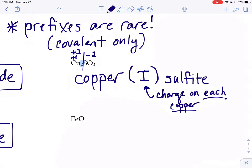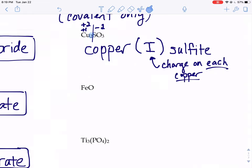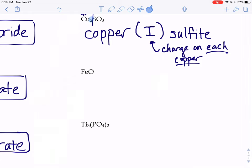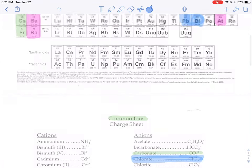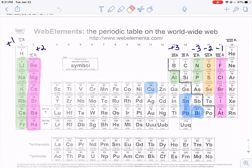Try another one of those guys. FeO. Fe is iron. When you look at where iron is on the periodic table, just saying iron isn't enough, we need a Roman numeral there. What kind of iron is it?